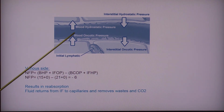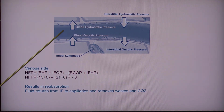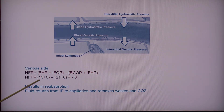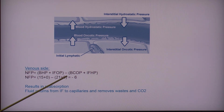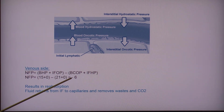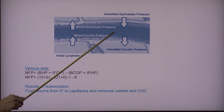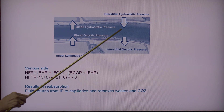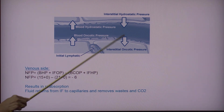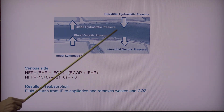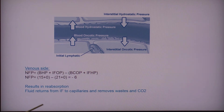The blood hydrostatic pressure in veins is much lower than in arteries — it's only 15. So when I plug in all the other numbers, I end up with a negative net filtration pressure. A negative number means